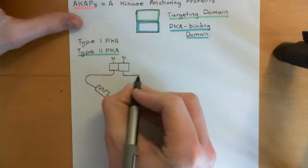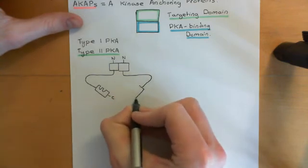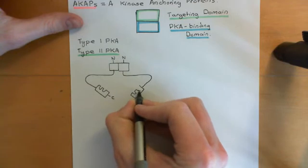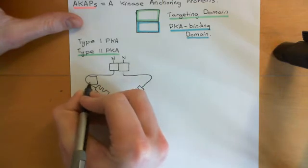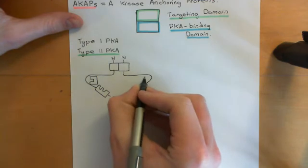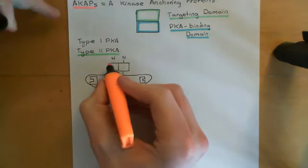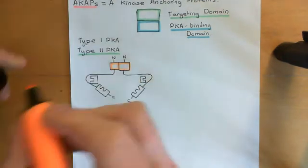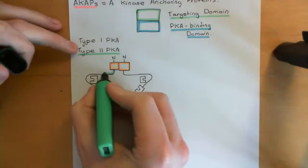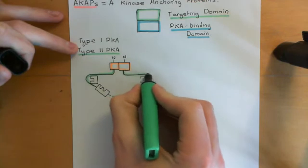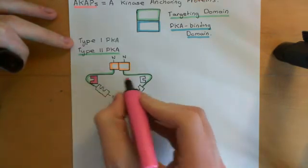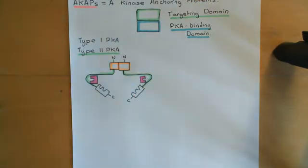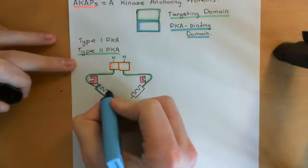A second regulatory subunit is dimerized here, also with its dimerization and docking domain, linker, cyclic nucleotide binding domains, and C-terminus. Attached into this region we then have the catalytic subunits of protein kinase A. Coloring this in: the dimerization/docking domains in orange, the linker regions in green, the catalytic subunit in vivid purple, and the cyclic nucleotide binding domains in blue.